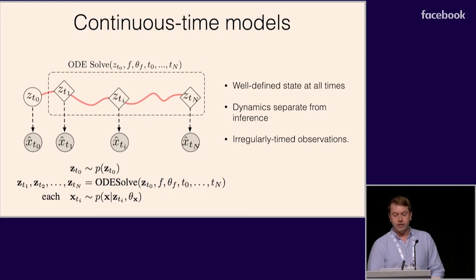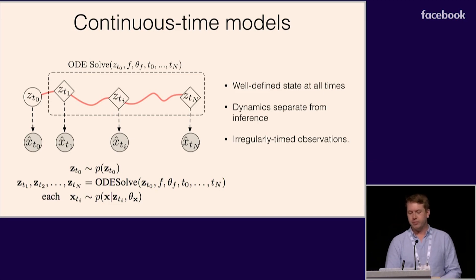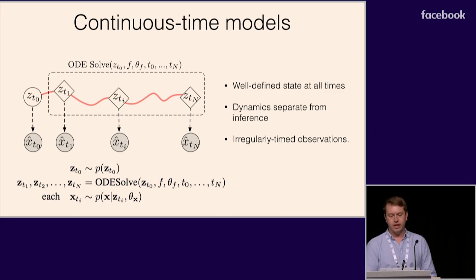Now that we can fit ODEs with gradient descent, we can use this to build better time series models. Specifically, we can train physics-style models in which a latent system has continuous time dynamics. We can also add complicated noise models to the observations. Unlike recurrent neural networks, these models have a well-defined state at all times, and they decouple the specification of the system dynamics from inference about the latent state. This lets us handle data that arrives at irregular intervals in a principled way.